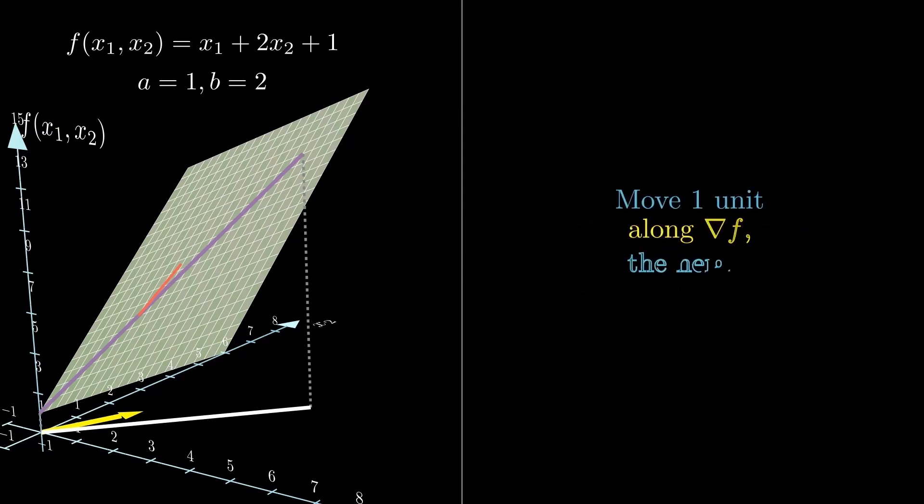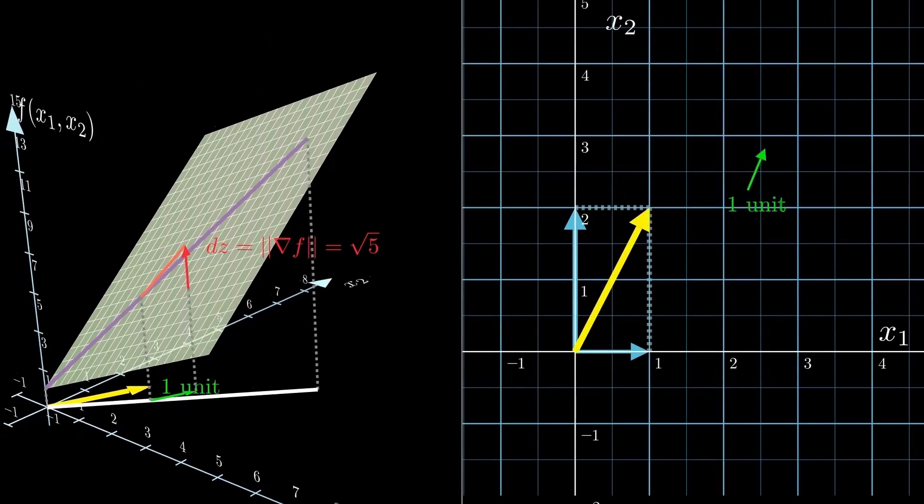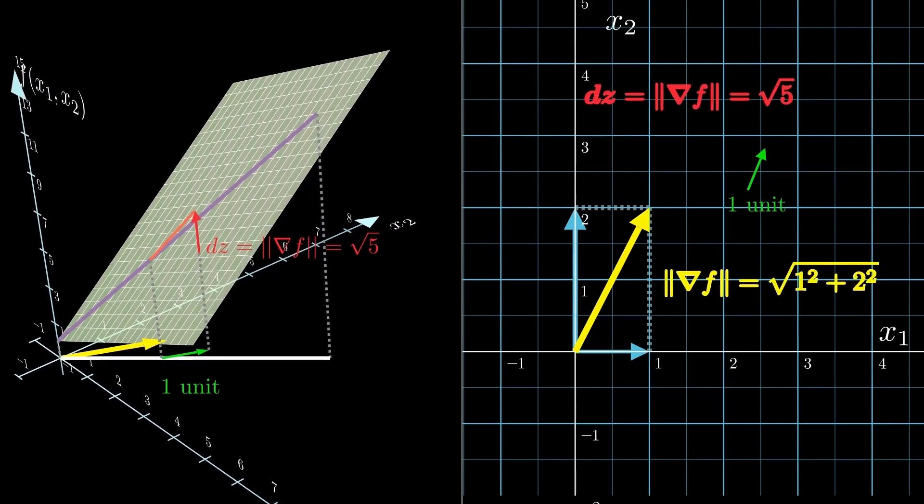In other words, the gradient's magnitude tells us if we move one unit in the gradient direction, the function increases by exactly that much. In this example, the gradient's magnitude is the square root of 5. So that means if we move just one unit in the yellow gradient direction, the function value goes up by the square root of 5.